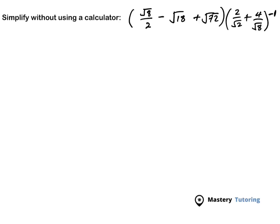The first thing we're going to do as we're solving this question is to rewrite the 18. So 8 can be rewritten as 4 times 2 — this is still 8. And then we subtract, and 18 can be written as 2 times 9.